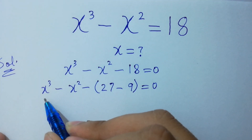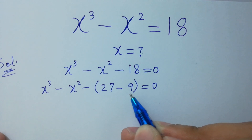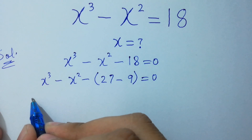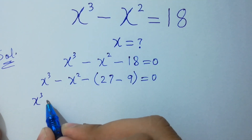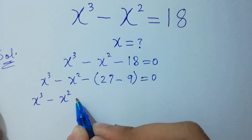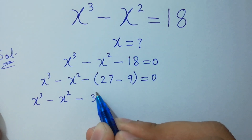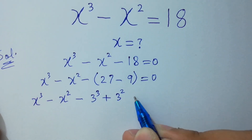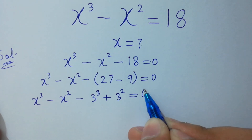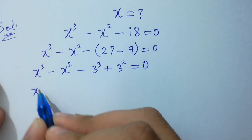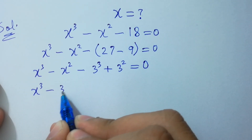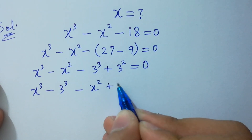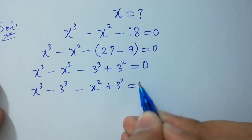Here is x cubed. There is 3 squared and here is x squared. I hope you understood. So we write x cubed minus x squared minus 3 cubed plus 3 squared, which is 9, equals 0. x cubed minus 3 cubed corresponds, and minus x squared plus 3 squared corresponds, equals 0.